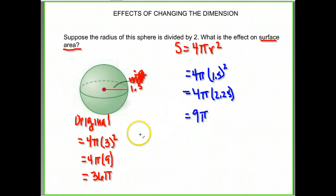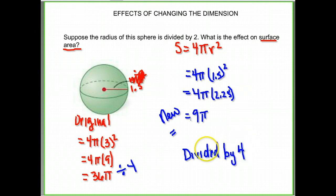So here are our two surface areas. Here's the original, and here is the new. What happened to it? How do you get from 36 to 9? Well, our radius, it happened when we divided the radius by 2. Notice 36 divided by 4 is 9. So what was the effect? It was divided by 4.